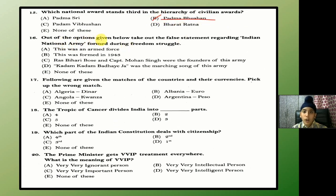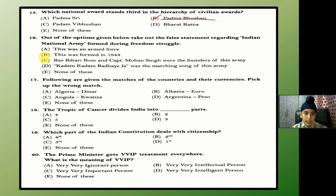Out of the options given below, take out the false statement regarding the Indian National Army formed during the Freedom Struggle. The answer is B — this was formed in 1943. Actually, the Indian National Army was formed in 1942.